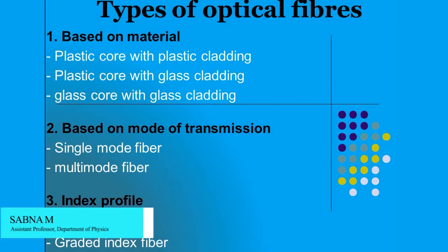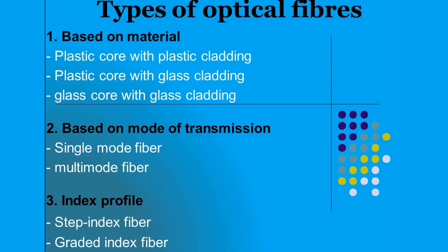Hello everybody. We have discussed optical fibers in the last class — I gave an introductory note about why optical fibers are used and what are the prominent properties that make them peculiar. Now in this class we are going to discuss different types of optical fibers, that is how we classify them — based on the material they are made of, they are classified into three categories.